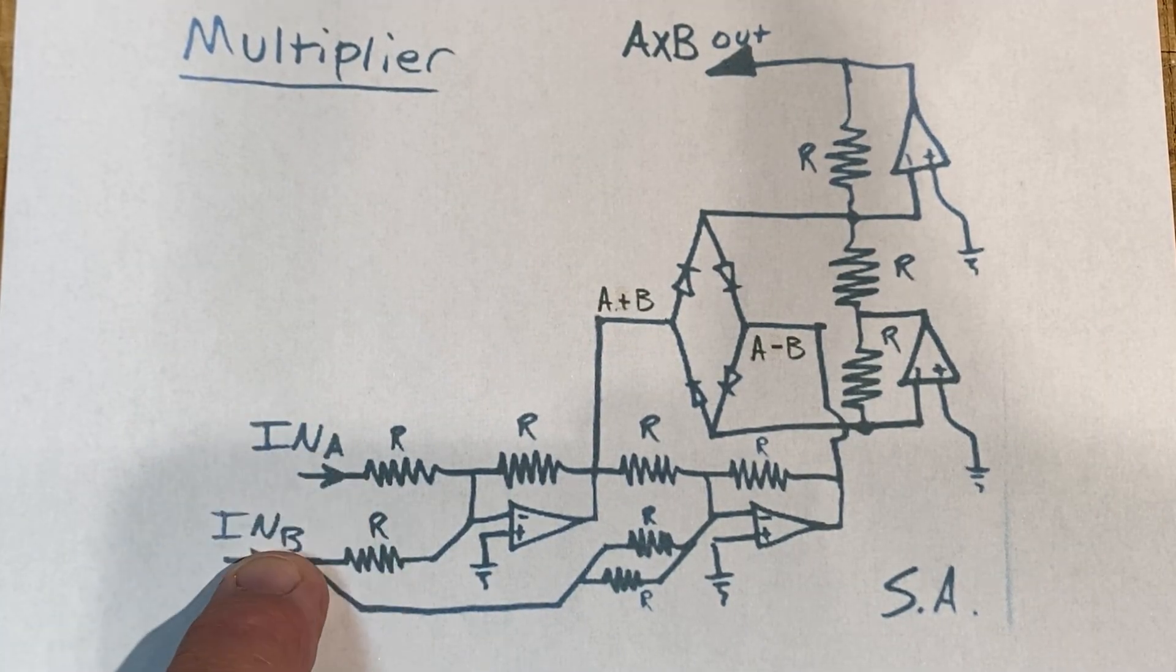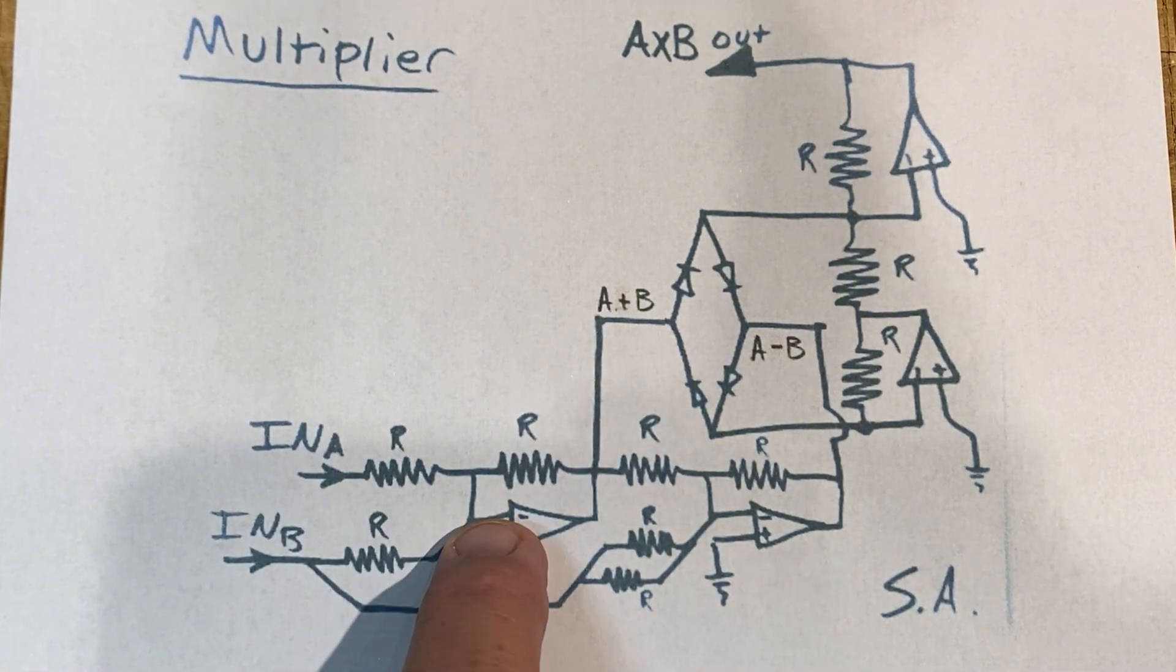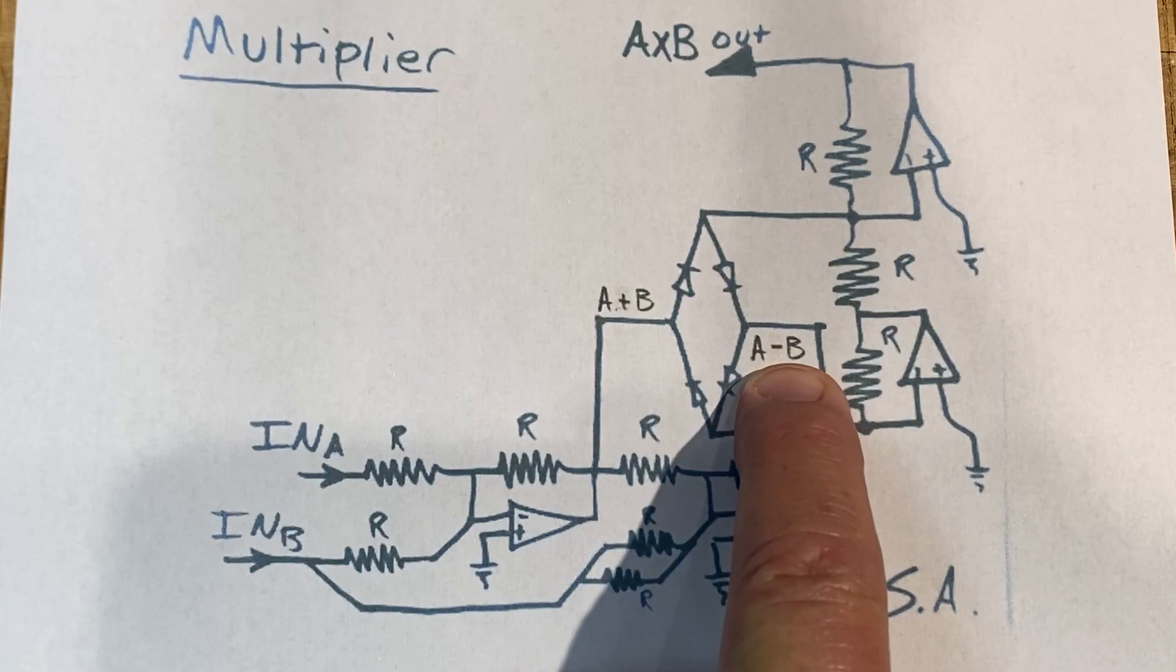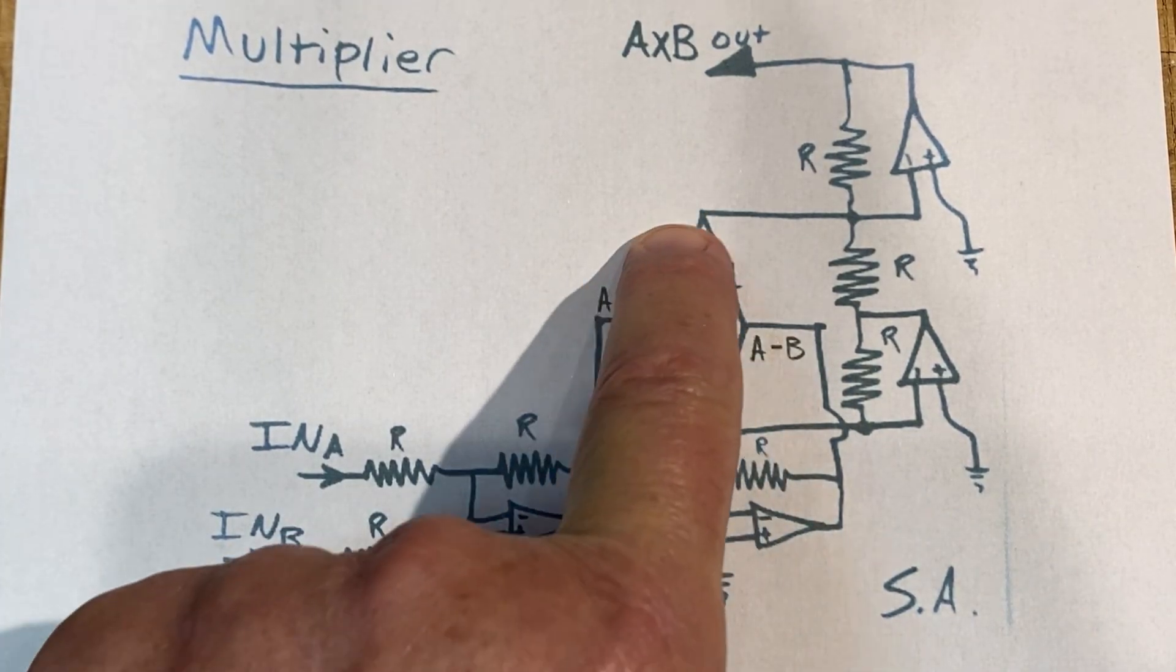I have my two inputs, and I produce the sum, and I produce the difference of the two signals, and lo and behold, we have our diode ring again.